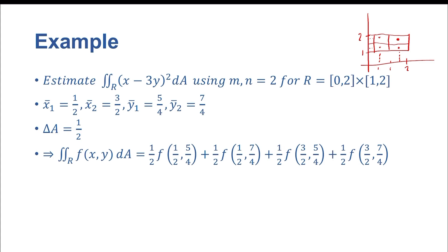So now what we're going to do is we're going to just evaluate this function. We evaluate this function here, f of x, y equals x minus 3y squared at all of these points, at all of these ordered pairs. What we get is 1 half times negative 67 sixteenths, plus 1 half times negative 139 sixteenths, plus 1 half negative 51 sixteenths, plus 1 half times negative 123 over 16. And we get negative 95 over 8.